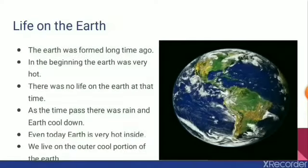Let us get more information about the Earth. Do you know when the Earth was formed? Earth was formed long time ago — around 4.5 billion years ago. In the beginning, the Earth was very hot. It was not cool like it is at present and there was no life on the Earth at that time. Gradually, rain occurred, the temperature cooled down, and Earth became cool. So now the outer surface of the Earth is cool, though even inside, the Earth is still hot.